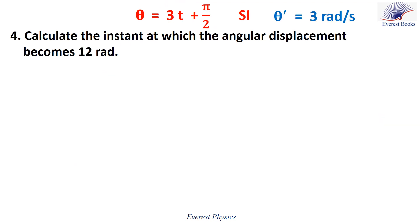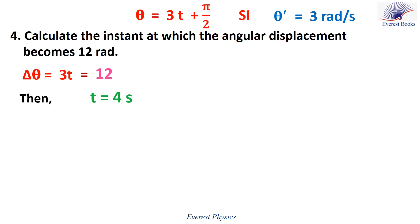Number 4: Calculate the instant at which the angular displacement becomes 12 radians. We proved that the angular displacement delta theta equals 3T. Setting 3T equal to 12 radians gives T equals 4 seconds.